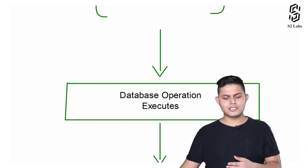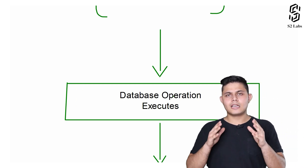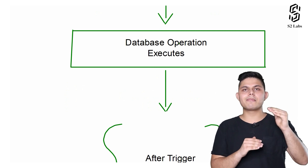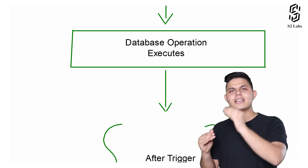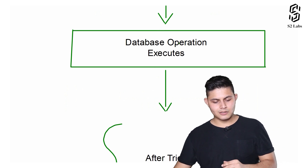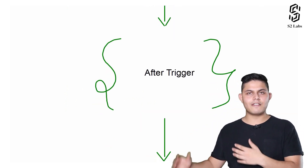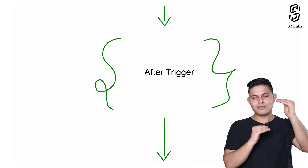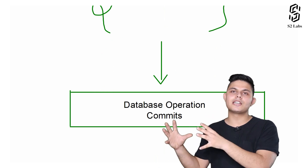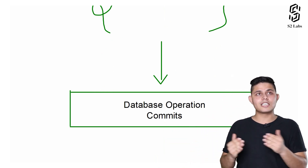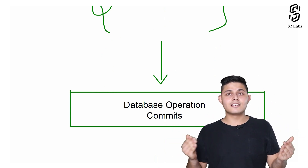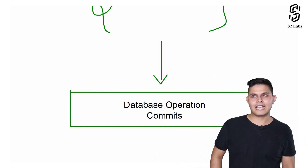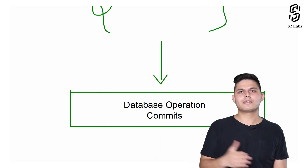After the database operation executes successfully without any problem, it moves to the after trigger and executes that code. After executing the after trigger, if everything goes well, the database operation gets committed into the database — and whatever updates or changes the triggers have made along this process will also get committed into the database.